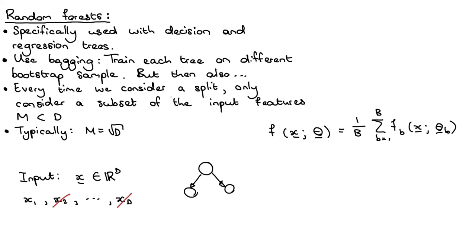Then within the tree growing algorithm, every time we consider a split instead of considering all my d features, I only consider a subset of m random features. So I select from my list of d features, I select a subset of m of them, and I only consider them when I'm splitting this node.